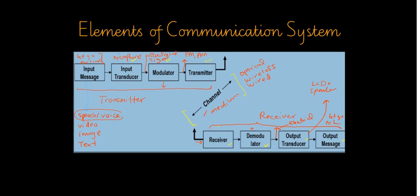These are the elements of a communication system. We must have a transmitter side, a channel or medium, and a receiver side. As mentioned earlier, at the channel — through the transmission — there will normally be noise present, which will cause some distortion or disruption to the original signal.